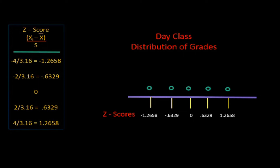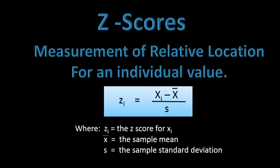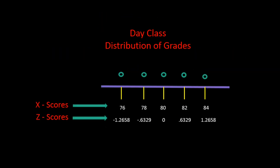Once data is standardized to z-scores, datasets can be compared and analyzed easily no matter what the underlying original units are. Let's look at the formula for converting x-scores to z-scores one more time. Z is calculated by taking each x subscript i, subtracting the mean x-bar, and dividing by s, the sample standard deviation. Using this formula, we can calculate a corresponding z-score for any x-score. One last important point: the mean for the new standardized values will always be zero, numbers to the left of the mean will always be negative, and numbers to the right will always be positive.